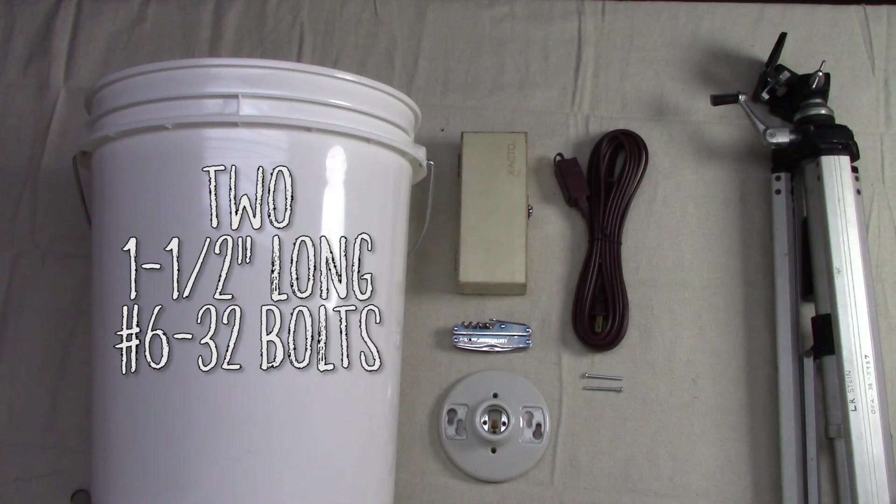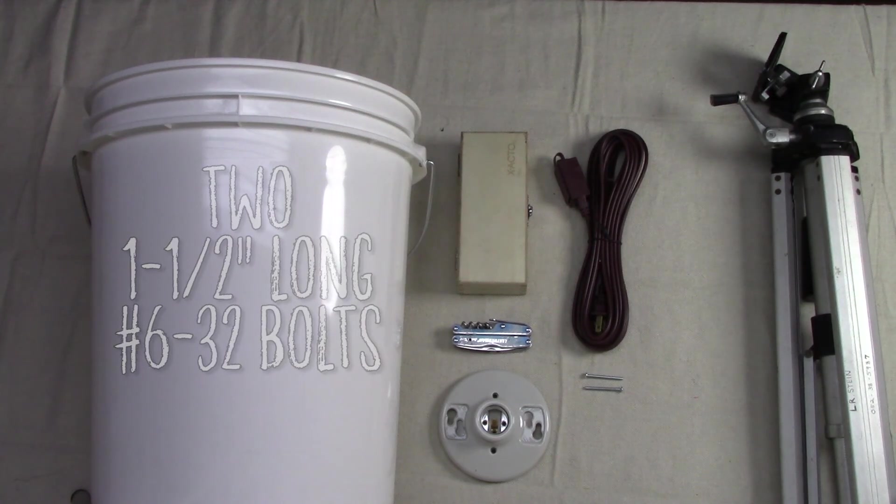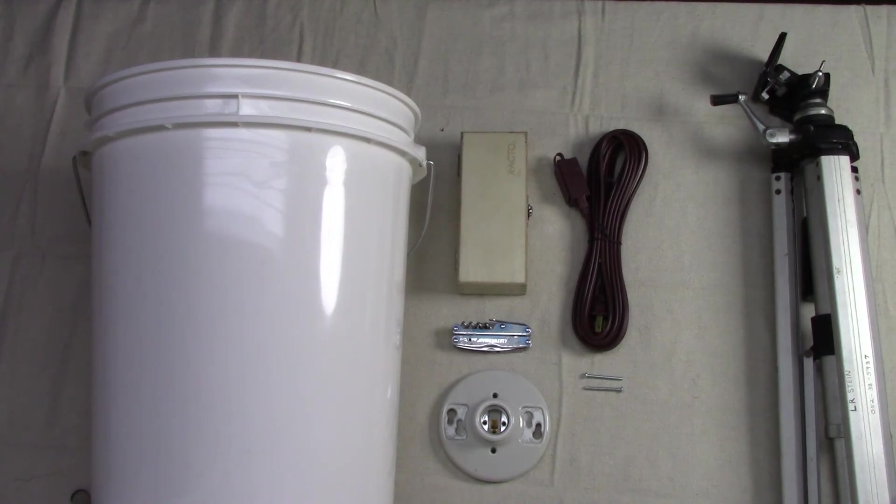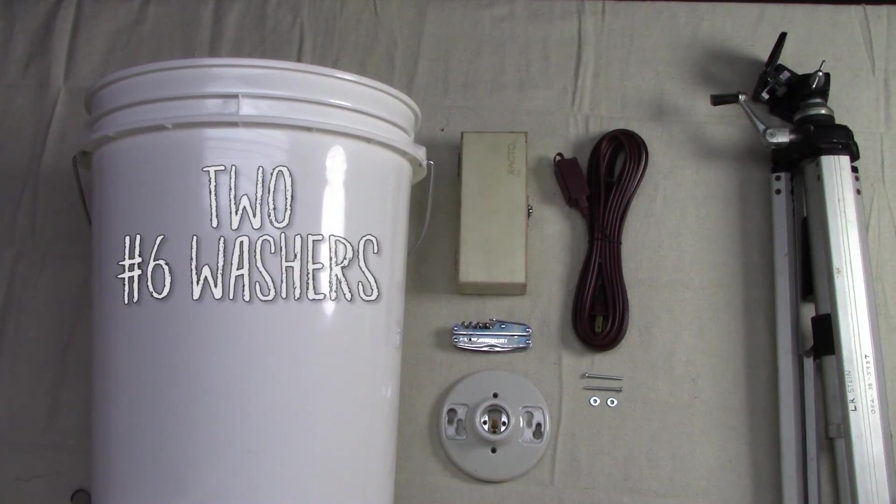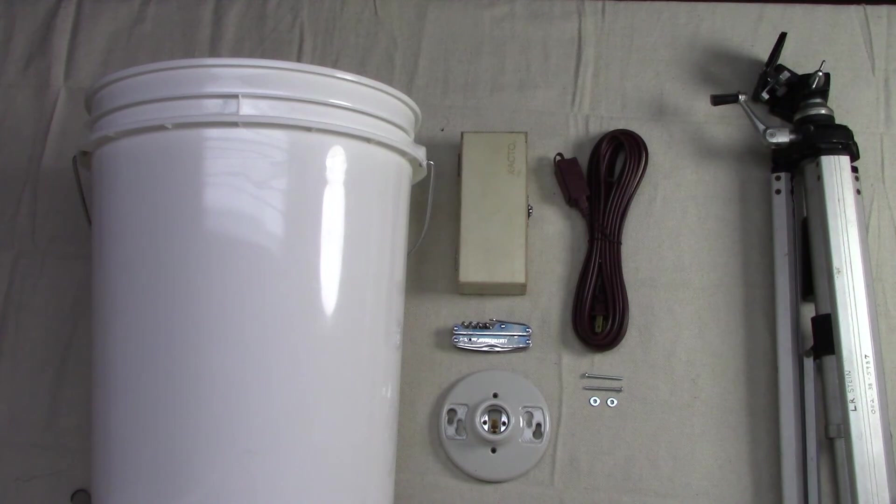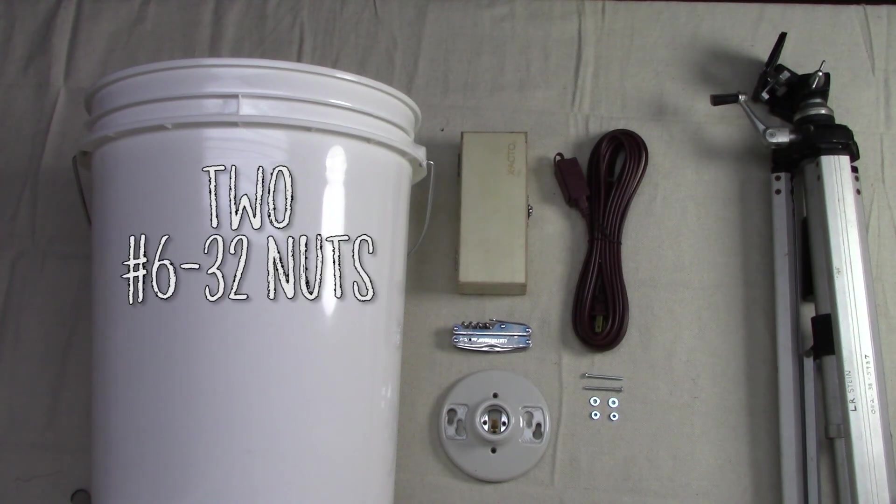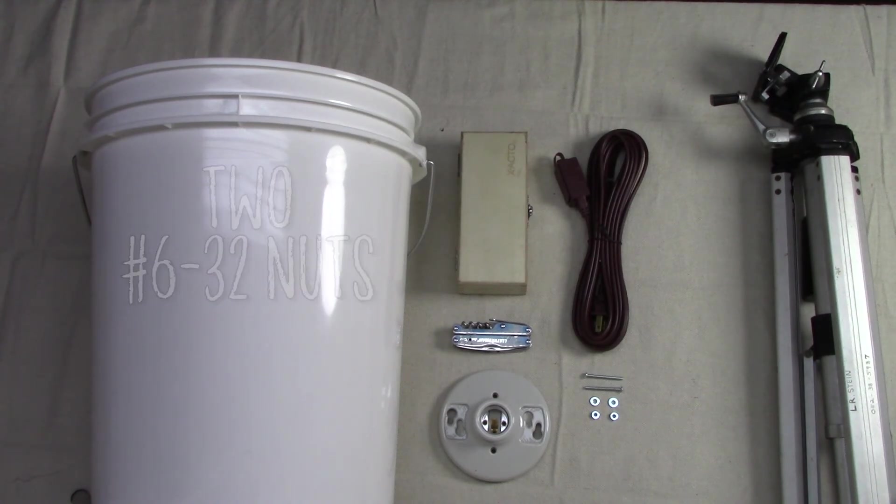Two number six dash 32 bolts that are 1.5 inches long. You can get away with shorter, but the extra length makes it easier to get them in the holes later. Two number six washers to stop the nuts from being pulled through the bucket, and two number six dash 32 nuts. This is the hardware that will keep all of the lights from falling out of the bucket.